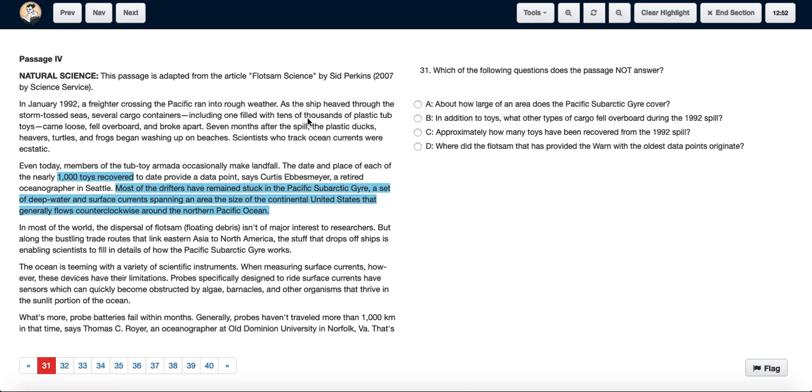filled with tens of thousands of plastic tub toys came loose, fell overboard and broke apart. Seven months after the spill, the plastic ducks, beavers, turtles and frogs began washing up on beaches. Scientists who track ocean currents were static, and then the paragraph goes on to talk about these tub toys itself. So they did not really